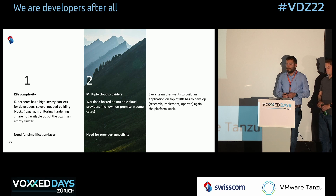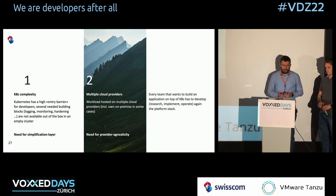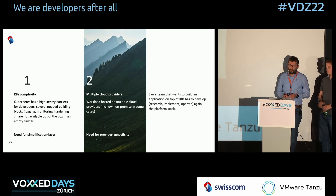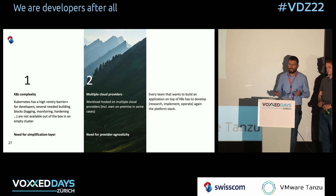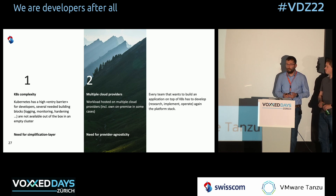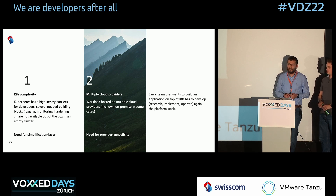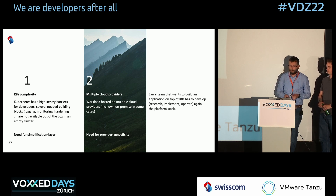And with that comes the problem of complexity. Kubernetes has a high barrier of entry for developers. A lot of the building blocks for a service are not present on an empty Kubernetes cluster — when you order one, it's just empty, nothing is there. Every team that wants to build a service on a new Kubernetes cluster has to rethink, redesign, and rework the platform stack on which the application is going to sit.